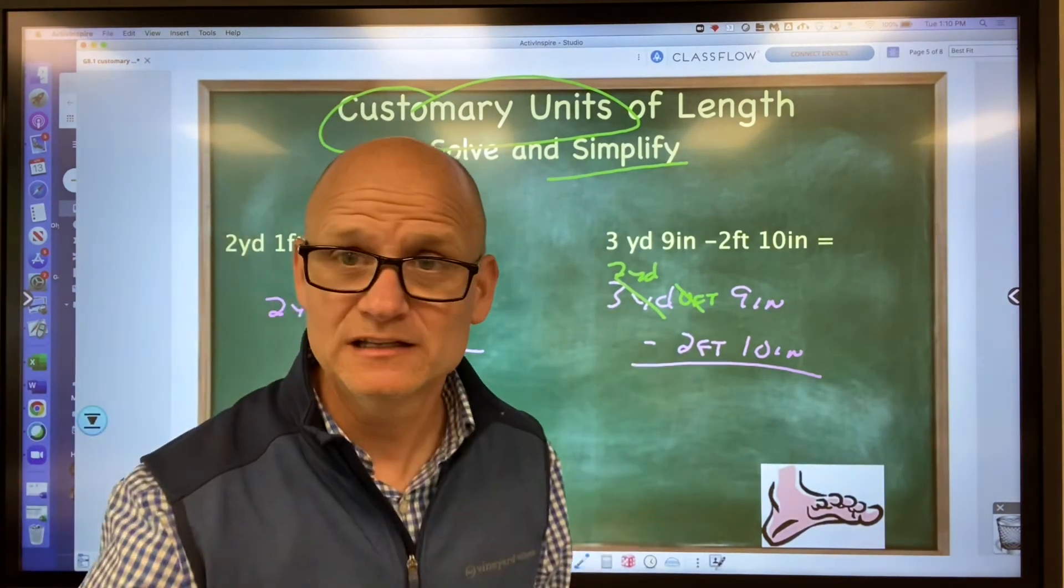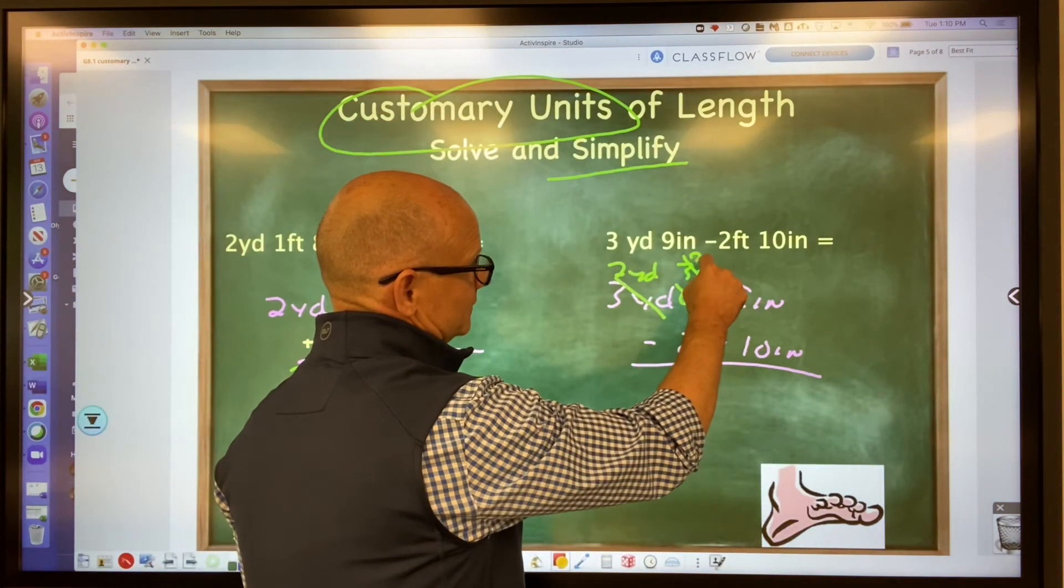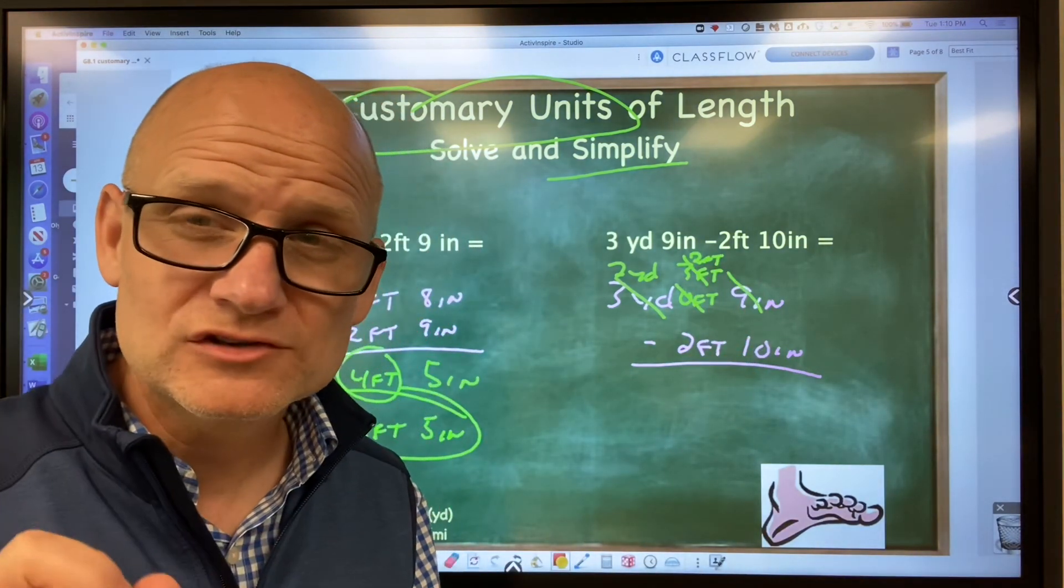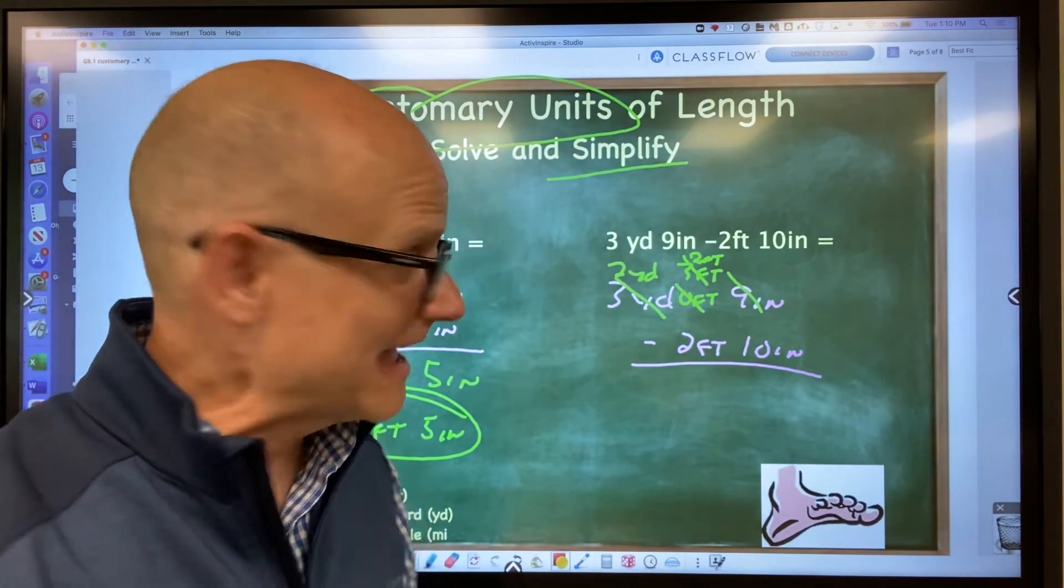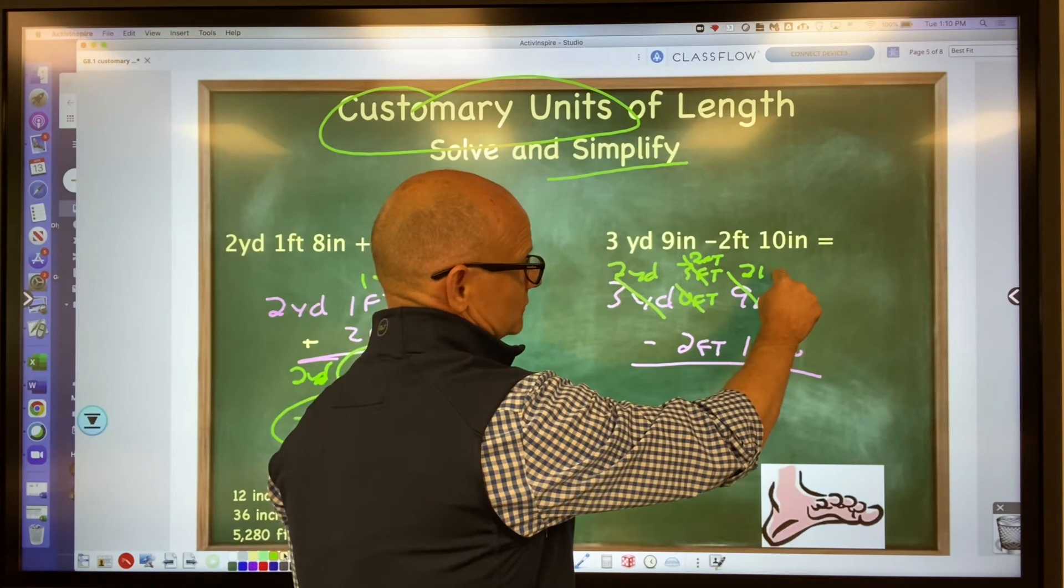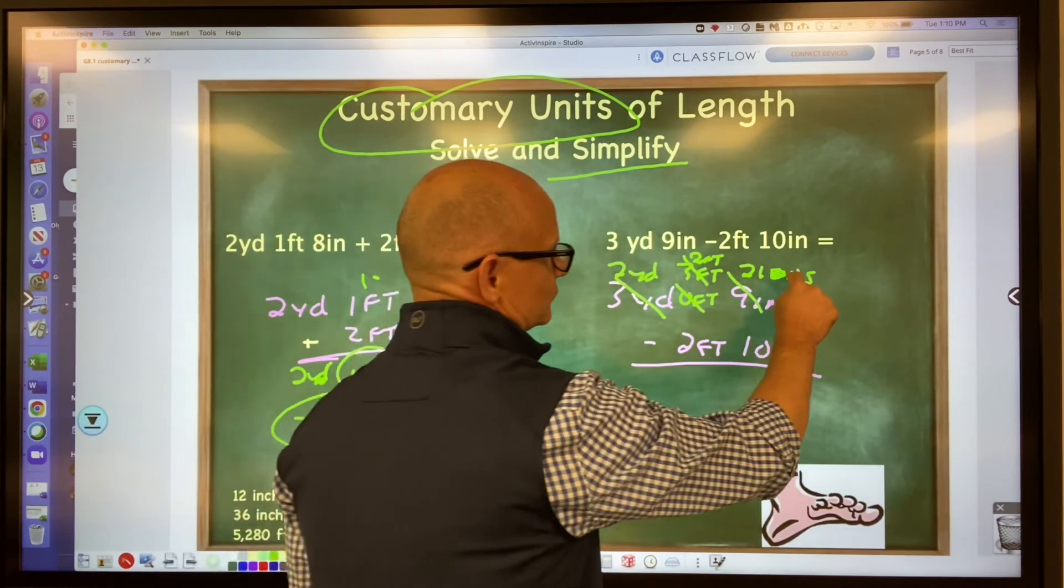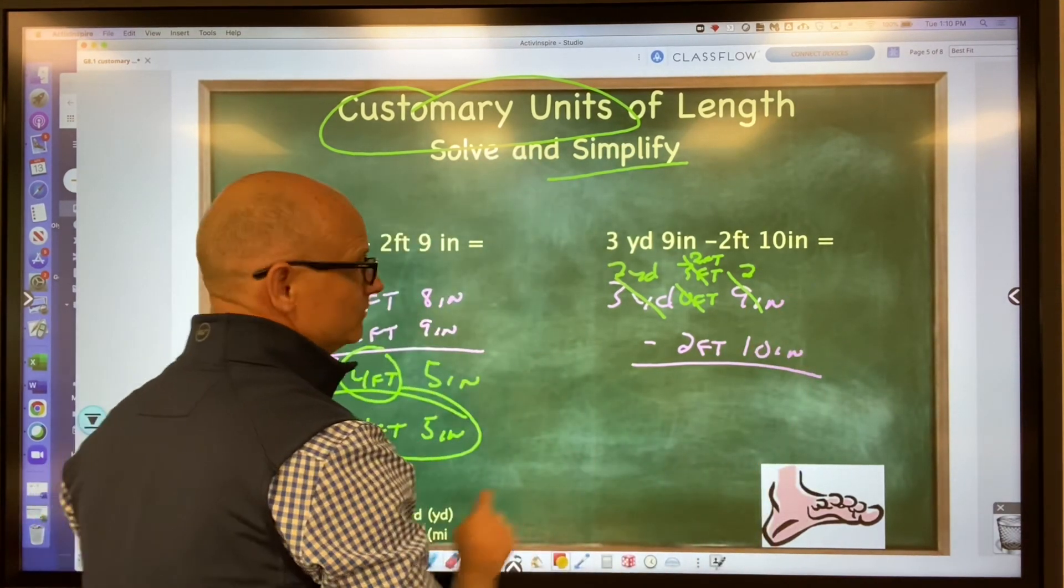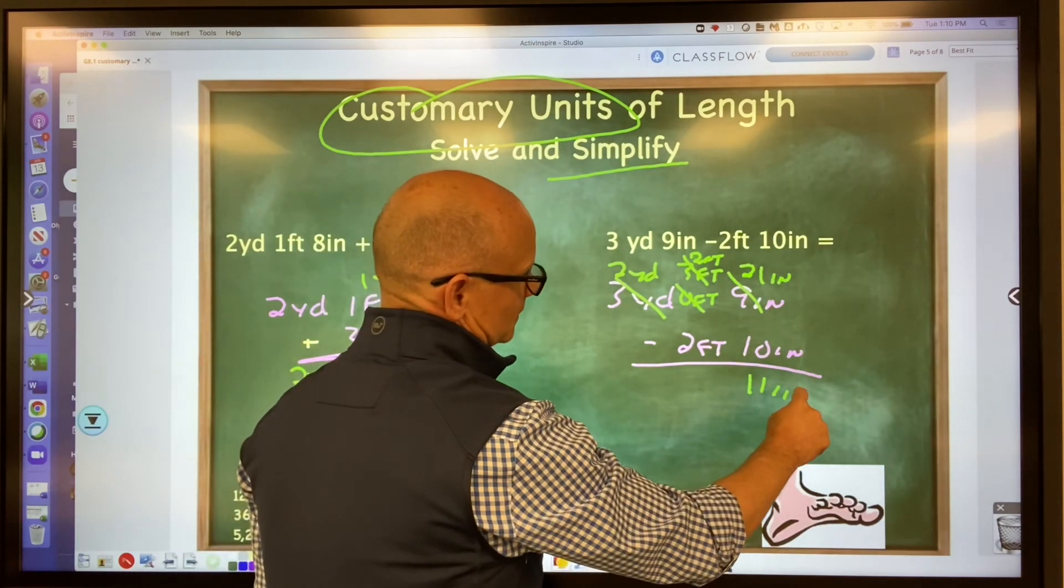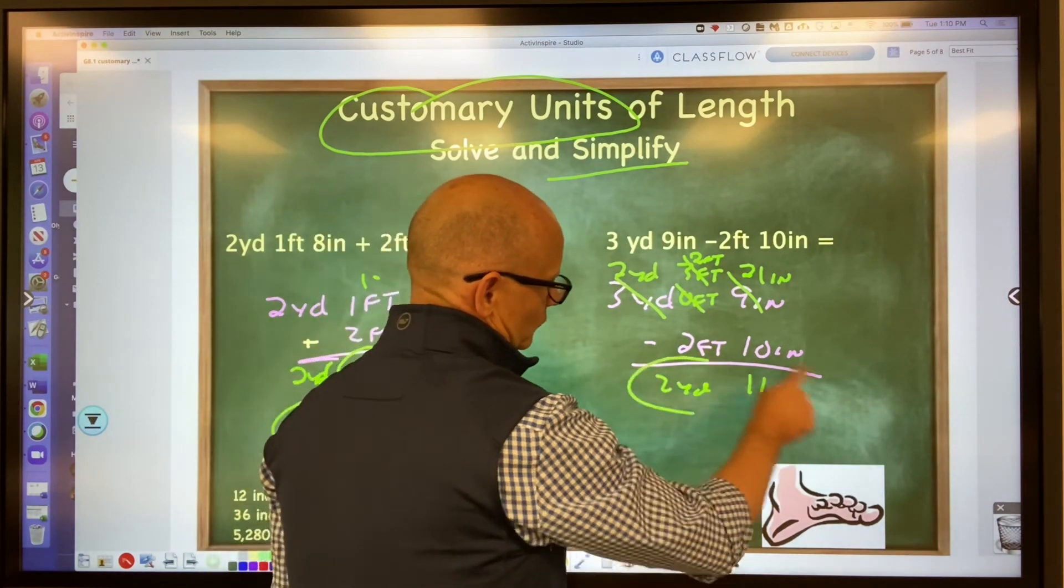I'm going to borrow a yard and add three because there's three feet in a yard. Now let's borrow a foot and add. I'm borrowing one foot. How many inches in a foot? 12. Add 12 to the 9 and that gives you 21 inches. Now subtract: 21 minus 10 is 11 inches. Two feet minus two feet is zero feet. Then two yards.